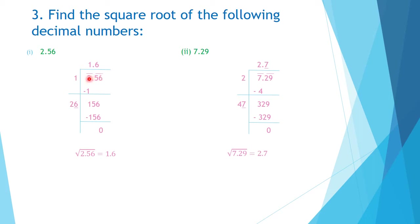Now, after putting bars, we start the division. The first group is 2. The square root of 2 lies between the squares 1 and 4, so the smaller square is 1 and its square root is 1. We write 1 in the quotient and on the divisor side. 1 into 1 is 1; subtract: 2 minus 1 equals 1. Copy down the next group, so the number becomes 156.